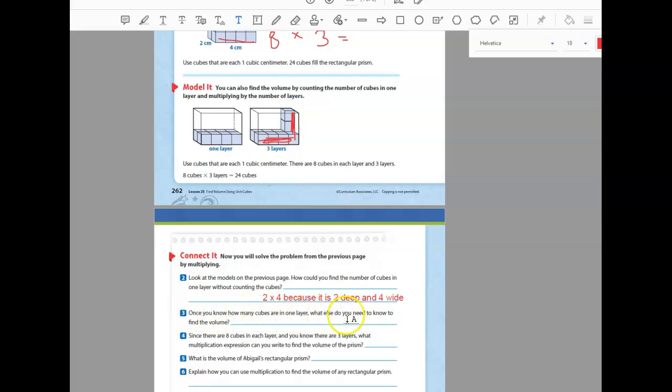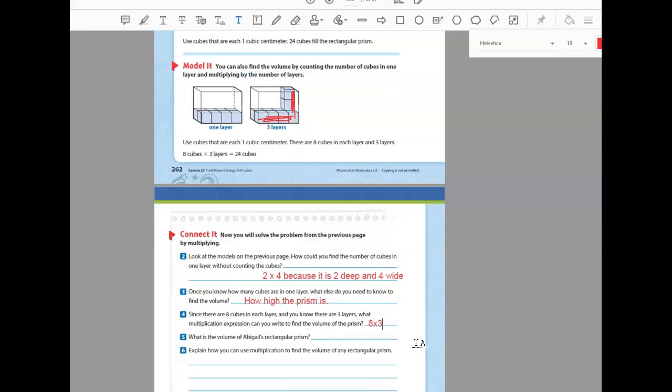Once you know how many cubes are in one layer, what else do you need to know to find the volume? We need to know how high the prism is. Since there are eight cubes in each layer and there are three layers, what multiplication expression can you write to find the volume of the prism? It's eight times three. What is the volume? It is 24 cubic units.